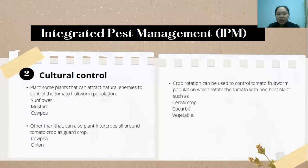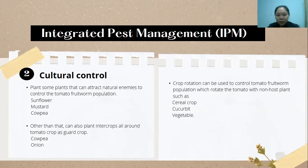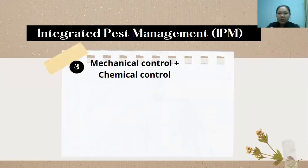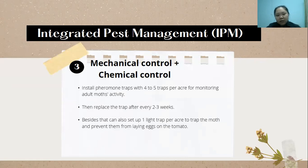The second method is cultural control. We can plant plants that attract natural enemies to control tomato fruit worm populations. We can also plant intercrop plants around the tomato crops as trap crops, for example onion and cowpea. We can also do crop rotation to control the population of fruit worms, rotating tomato crops with non-host plants such as cereal crops or other vegetables.